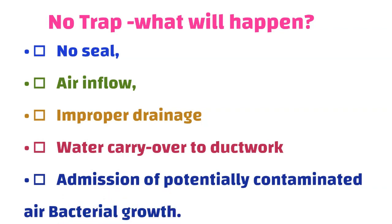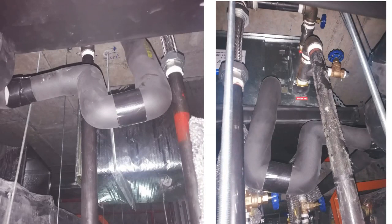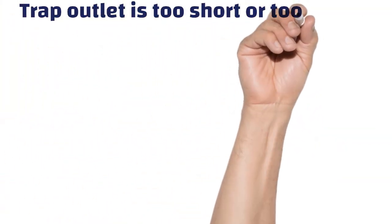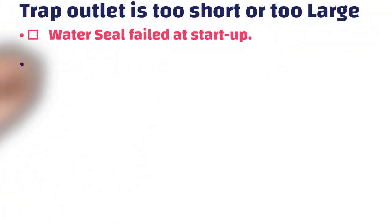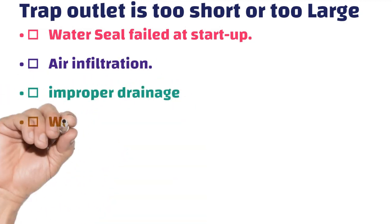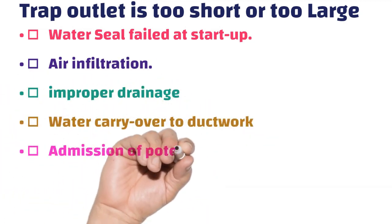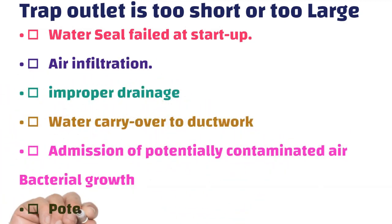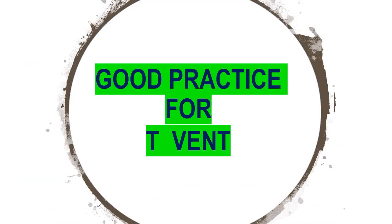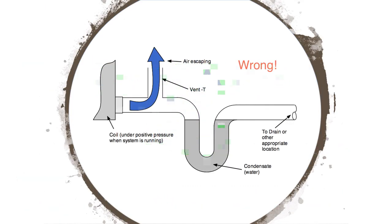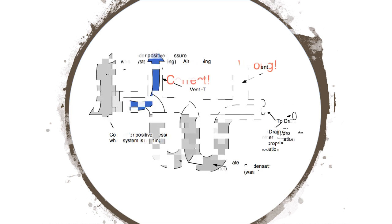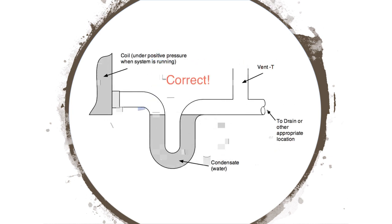What happens if there is no trap in the condensate pipe? One: no seal. Two: air inflow. Three: improper drainage. Four: water carryover to ductwork. Five: admission of potentially contaminated air and bacterial growth. There should not be an air vent between the drain pan and the trap — the air vent should normally be placed after the trap.